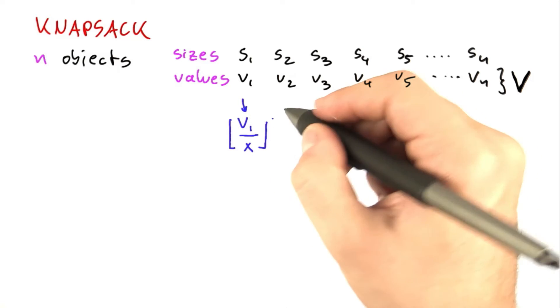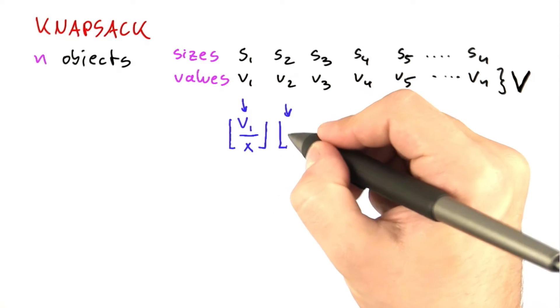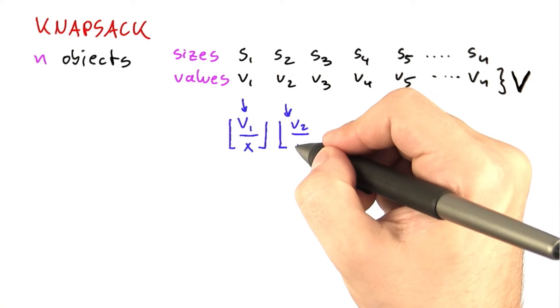And I'm going to write the rounding down like this, which is called a floor symbol in case you haven't come across that. So I'm going to write down the same thing here.